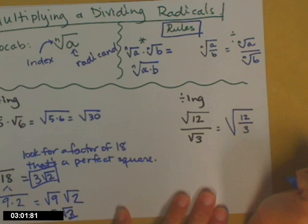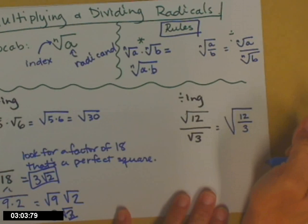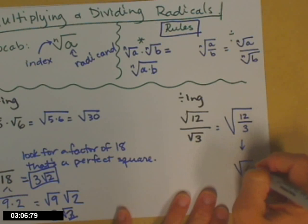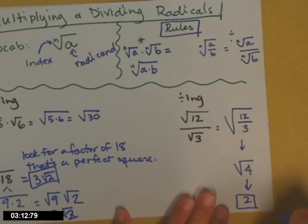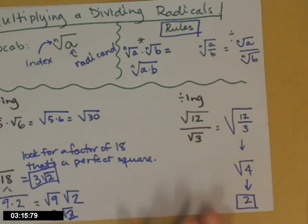12 in the top, 3 in the bottom. Now I can reduce that fraction. That's going to give me a square root of 4, which again, we know, is 2. So this expression simplifies to 2.